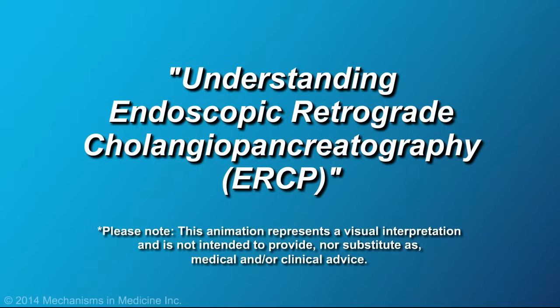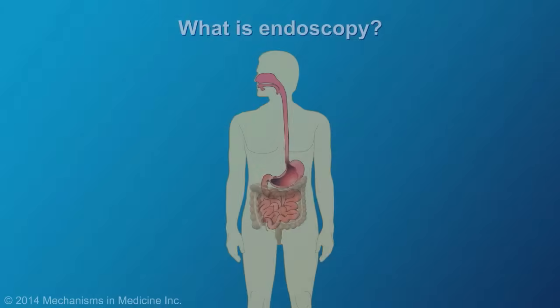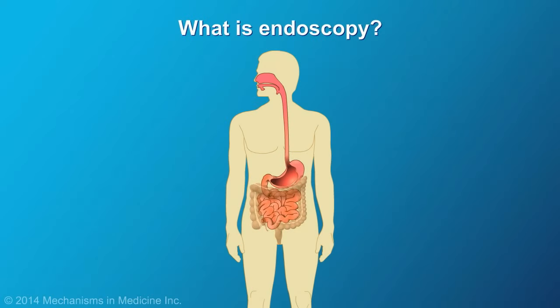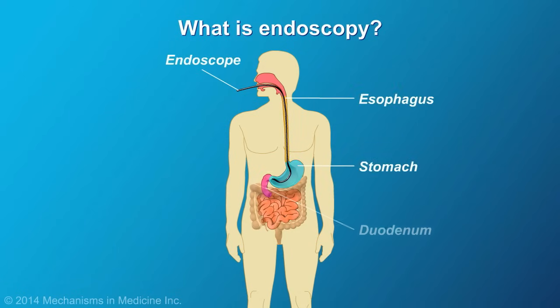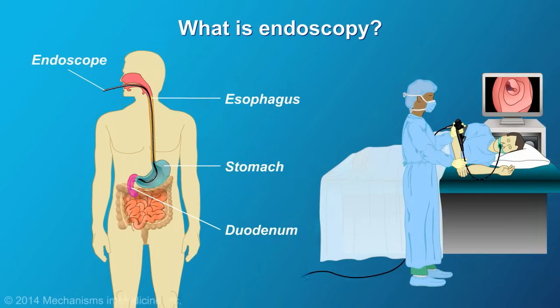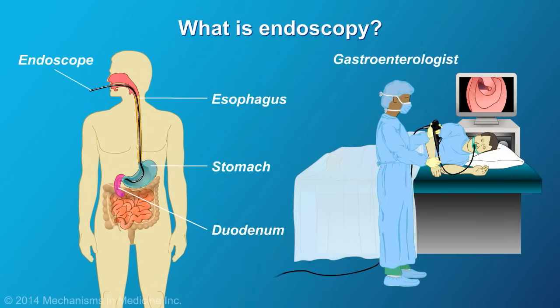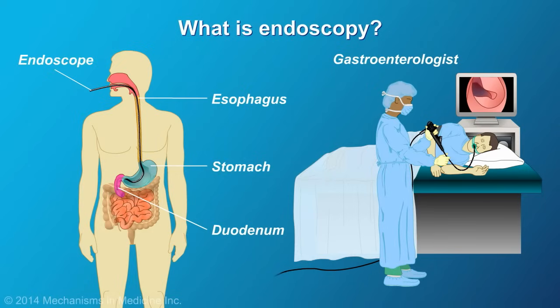Understanding Endoscopic Retrograde Cholangiopancreatography, or ERCP. Endoscopy is a medical procedure in which a flexible instrument that has a camera on the end, called an endoscope, is passed into an area of the body, such as the gastrointestinal or GI tract. Physicians specializing in diseases of the digestive system are known as gastroenterologists. Gastroenterologists use endoscopy to view the inside of a patient's body and may employ a variety of endoscopic procedures.